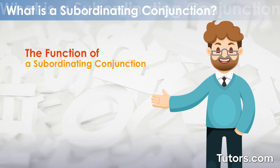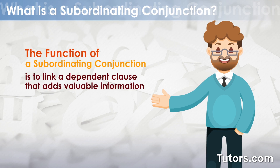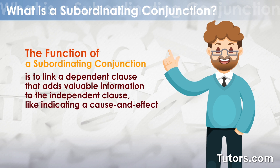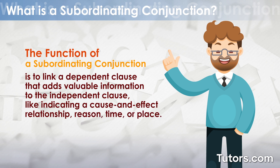The function of a subordinating conjunction is to link a dependent clause that adds valuable information to the independent clause, like indicating a cause-and-effect relationship, reason, time, or place.